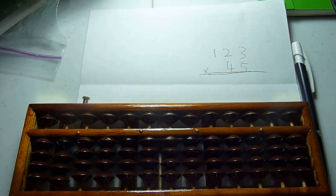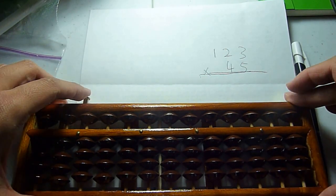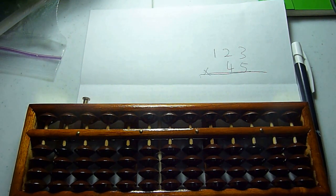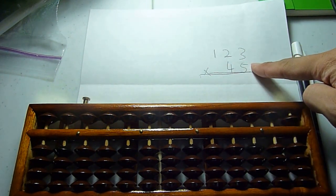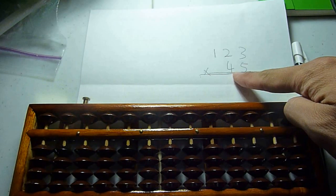Alright ladies and gentlemen, today I'm going to teach you about how to do multiplication on the abacus. Our example here is 123 multiplied by 45.